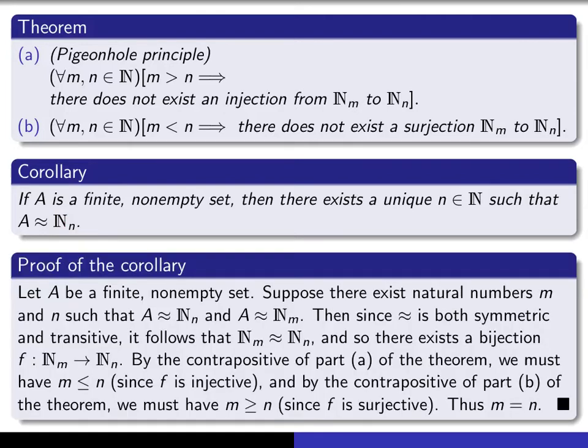So if A is a finite non-empty set, and suppose it were the case that there exist natural numbers m and n, such that A is equivalent to N sub n, and A is equivalent also to N sub m.